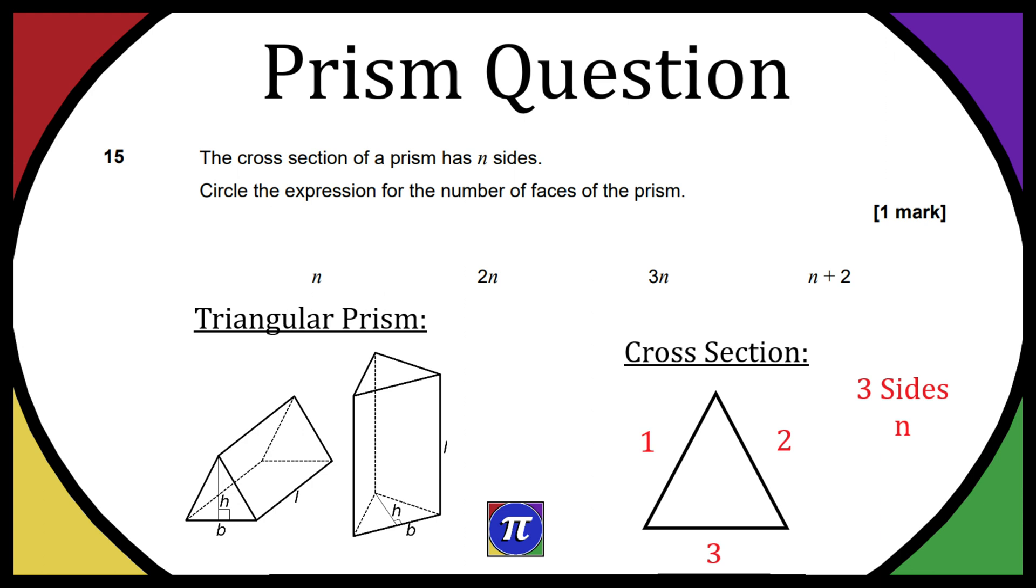It says circle the expression for the number of faces of the prism. The number of faces of the prism is going to be 5. They're basically the exterior panels of the shape. I know I've written five sides here - it should say five faces, but the important thing is the number. So we have five faces and three sides on the cross-section.